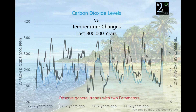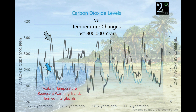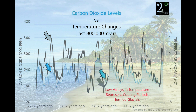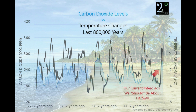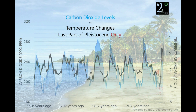We'll observe general trends with two parameters: carbon dioxide in blue and temperature in black. Observe how the two parameters correlate throughout the cycles. Peaks in temperatures represent warming trends, called interglacials. Low valleys in temperature represent cooling periods, termed glacials. Our current interglacial — we should be about halfway through. Notice carbon dioxide and temperatures fluctuate very nicely together, especially when we take out the Holocene. Sure, there are gaps, but the correlation is undeniable.